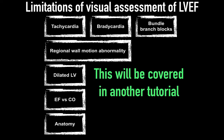Limitations include tachycardia, bradycardia, bundle branch blocks, regional motion abnormalities, dilated LV, and anatomy. Again, these limitations will be covered in another tutorial, and we will focus on an approach that is able to categorize over 90% to 95% of patients.